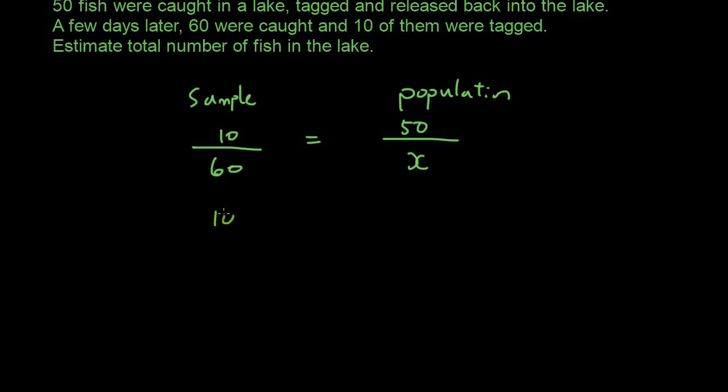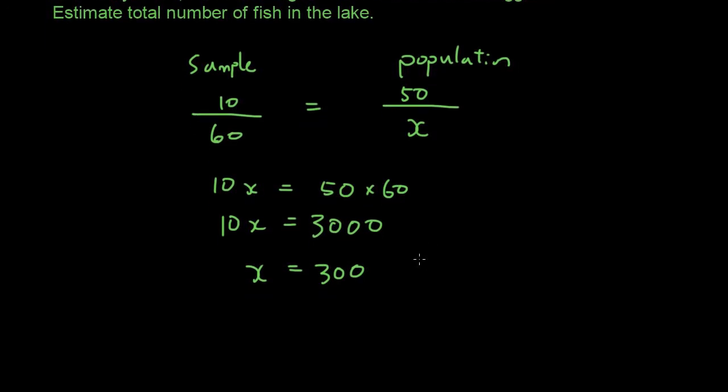So now we got 10 times x equals 50 times 60, because you would multiply both sides by x to move the x to the top. What's on the bottom goes to the top on the other side. So now 60 goes to the top. So now we have 10x equals 3,000. x equals 3,000 divided by 10, which is 300. So that is the answer. The total number of fish in the lake is 300.